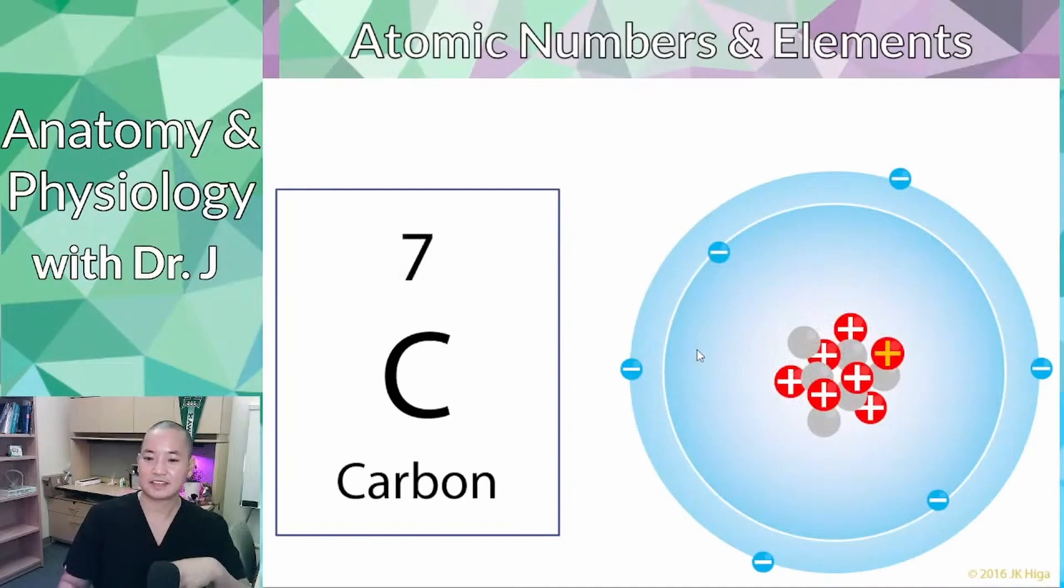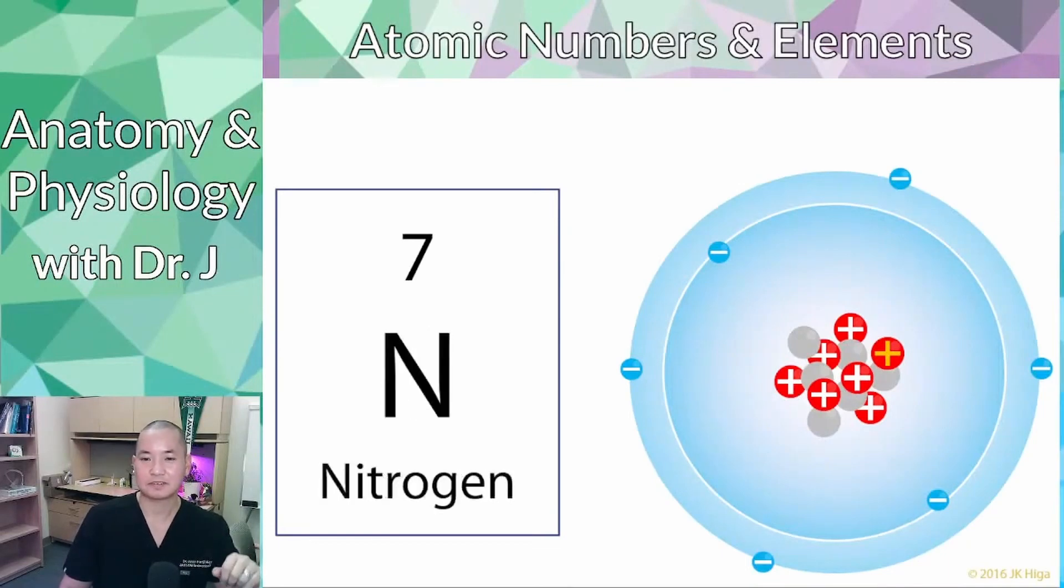So what if you added a proton to carbon, would it still be carbon? No, it wouldn't be carbon anymore, right? Because that changed the number. Therefore, if you change the number of protons in an atom, that would change the element. So now we have nitrogen with the atomic number of seven.